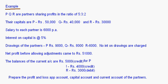Let's take a small example. P, Q, and R are partners sharing profits in the ratio of 5:3:2. Their capitals are P = ₹50,000, Q = ₹40,000, and R = ₹30,000. Salary to each partner is ₹6,000 per annum. Interest on capital is at 5% per annum. Drawings are P = ₹9,000, Q = ₹8,000, R = ₹6,000, with no interest on drawings charged. Net profit before adjustments is ₹51,000. Current account balances are P = ₹5,000, Q = ₹4,000 (credit), and R = ₹3,000 (debit). We need to prepare the P&L Appropriation Account, Capital Account, and Current Accounts.